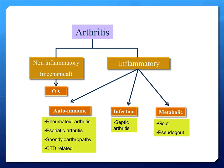Here's a diagram of conditions showing inflammatory versus non-inflammatory arthritis. The three main categories of conditions that cause inflammatory arthritis are autoimmune conditions, infections, as well as crystal arthropathy.